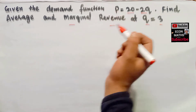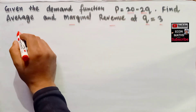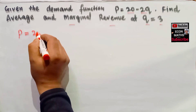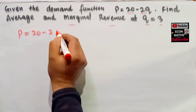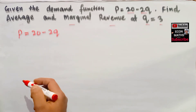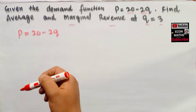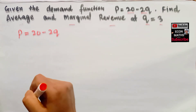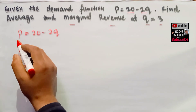So we have to find the value of marginal revenue and average revenue when the quantity is equal to 3. First of all, we write the demand function. Our demand function is given as P is equal to 20 minus 2Q. Now we will find the total revenue.